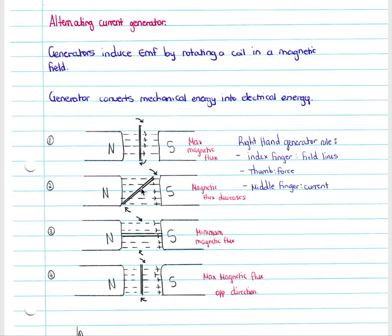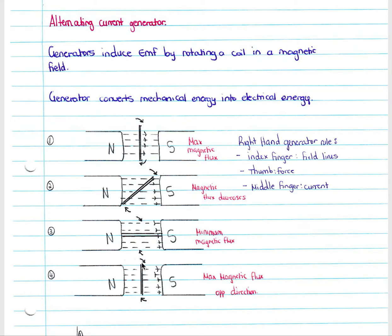As the coil rotates, the angle between the normal to the coil and the field lines increases from zero degrees towards 90 degrees, so magnetic flux decreases. At exactly 90 degrees the normal is perpendicular to the field lines, giving minimum flux. After 180 degrees of rotation, the flux is maximum again but now in the opposite direction, and the current in the coil flows in the opposite direction.